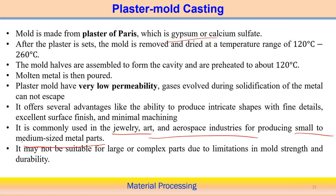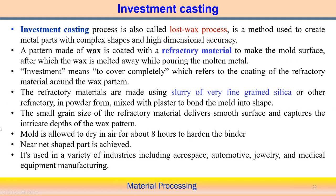Plaster mold casting is usually used in jewelry, art, and aerospace industries, and for small to medium size metal parts. It can be used for larger structures, but the mold must be designed with sufficient strength to sustain the large amount of material during casting. Overall, it is most suitable for small to medium size components.